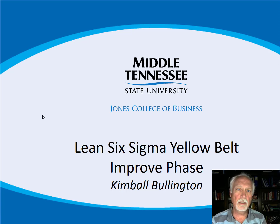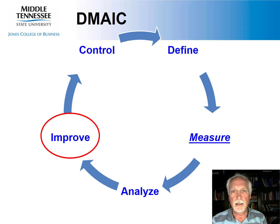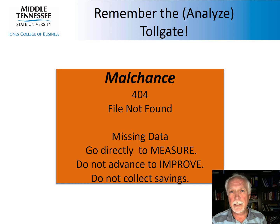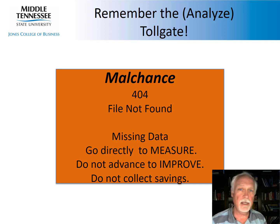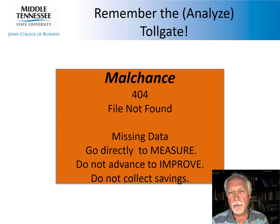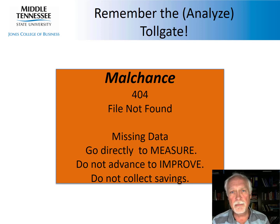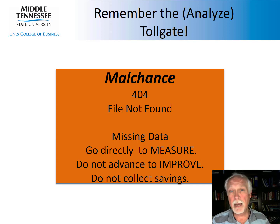Hi, I'm Kimball Bullington. This is Lean Six Sigma Yellow Belt improve phase. We're getting to the end of the DMAIC, and at the end of the analyze phase — the preceding phase — if you do not have enough data, you do not proceed to the improvement phase. Normally you would go back to the measurement phase and go back through that to make sure you've got it right.